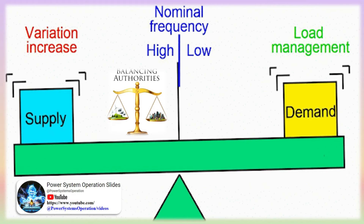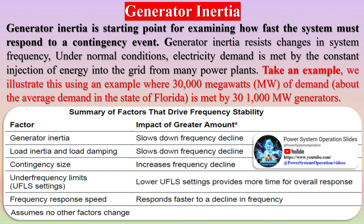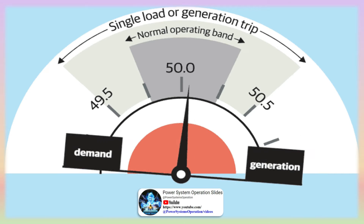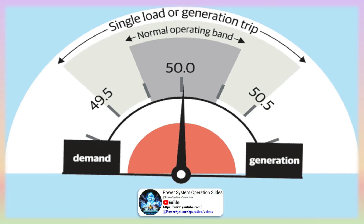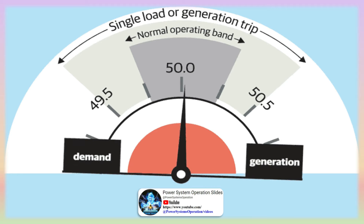Generator inertia is the starting point for examining how fast the system must respond to a contingency event. Generator inertia resists changes in system frequency. Under normal conditions, electricity demand is met by the constant injection of energy into the grid from many power plants. For example, 30,000 MW of demand — about the average demand in the state of Florida — is met by 31,000 MW of generators. If one of these generators were to fail, the remaining generators online would only provide 29,000 MW, but loads would still extract 30,000 MW.